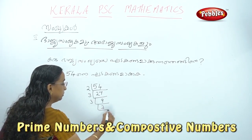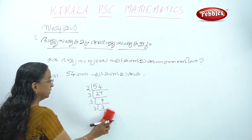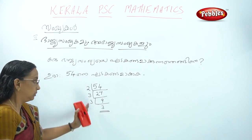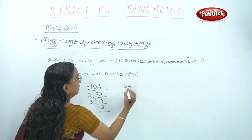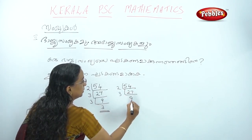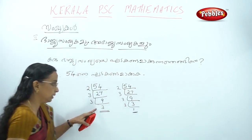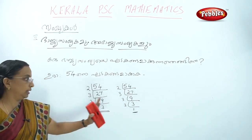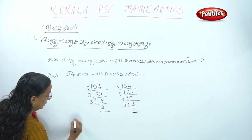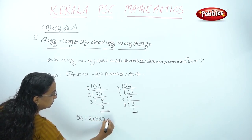The 3 is going to be 1. If we have 3, we will do the 3 method. This method is 54, 2, 27, 3, 9, 3, 3, 1. If we have 3, we will do the 3 method. Then we will do the 3 method.